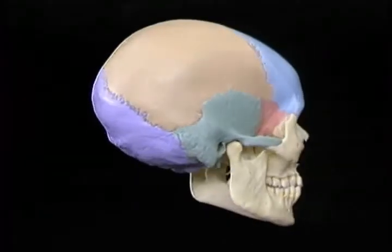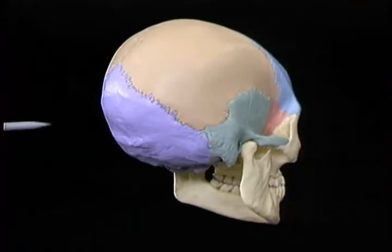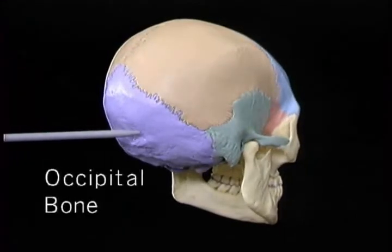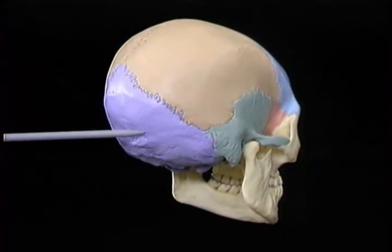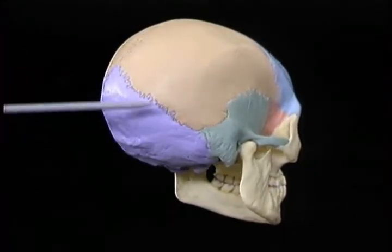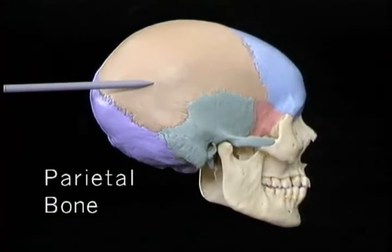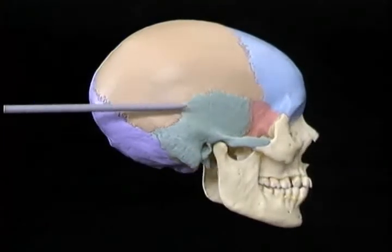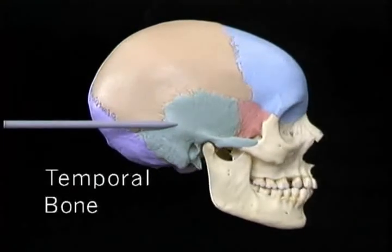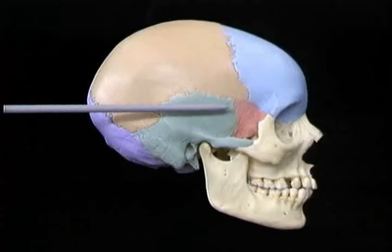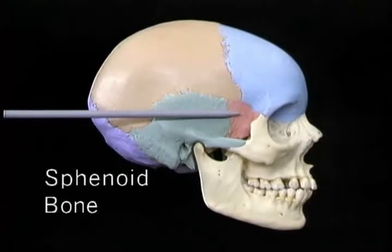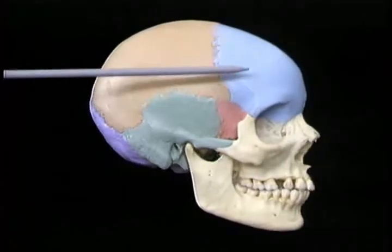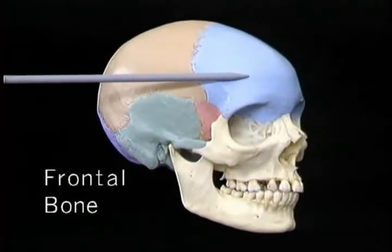The principal bones that form the cranium are the occipital bone behind and below, the parietal bone and temporal bone on each side, the sphenoid bone and the frontal bone.